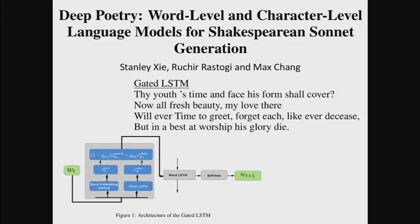Here are another couple of examples showing some of the other classes. This one is an example of 'find a problem and build some models.' These three people looked at Shakespearean sonnet generation, and they considered several different models for it — getting the best results from a mixture of word-level and character-level gated models that feed into a word-level LSTM and produce sonnets. The output wasn't totally bad: 'Thy youth's time and face his form shall cover. Now all fresh beauty, my love there, will ever time to greet' — it sort of sounds like a Shakespearean sonnet.